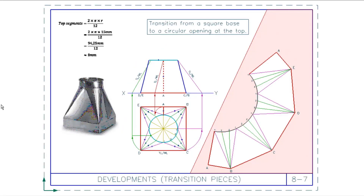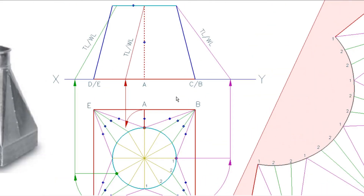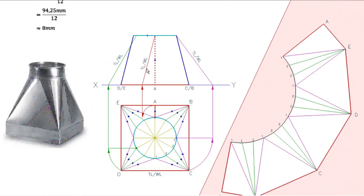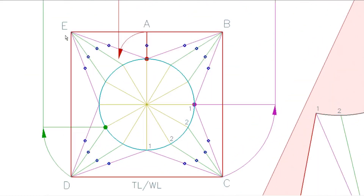Alright, for today's session we're going to be looking at a transition that changes from a square base to a circular opening at the top. You can see if we analyze the front view and the top view — the top view is flat, and so is the base, which means that in the top view the square base and the round top are both true shapes.